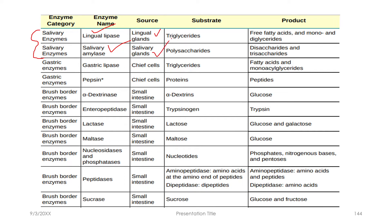Now for enzymes. Salivary amylase is produced by the salivary glands and is involved in carbohydrate digestion, breaking down polysaccharides into disaccharides and monosaccharides. Next are the gastric enzymes.